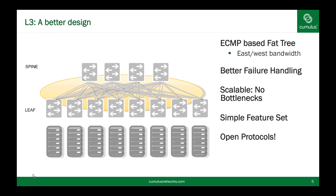By reducing all of these complex proprietary protocols that you see inside a Layer 2 network, you end up with a very simple feature set — traditional routing and switching, running OSPF or BGP — that you can scale to extraordinarily large clusters and even add more clusters together should your scale demand it by adding a spine of spines.